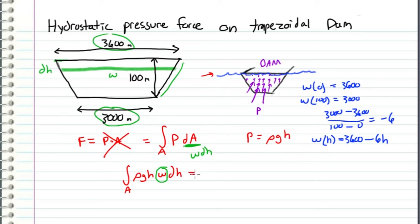Now we replace w with w(h), so we get ρgh times (3600 - 6h) dh.